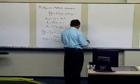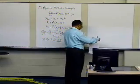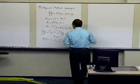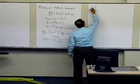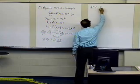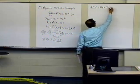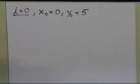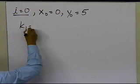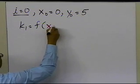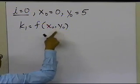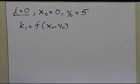Let's solve this using the midpoint method. I'll take i equal to 0, which gives me x0 equal to 0, and y0 equal to 5, because that's the initial condition — the initial condition is given at x equal to 0, so y0 is 5. The subscripts 0 are used because I've chosen i equal to 0.